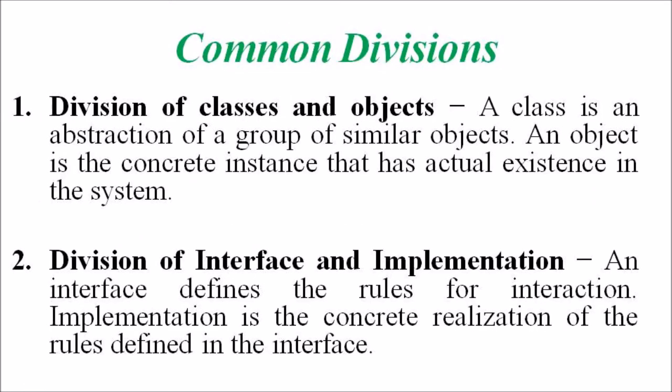The third common mechanism is common divisions. Object-oriented systems can be divided in many ways. The two common ways are: the division of class and object, and the division of interface and implementation. A class is an abstraction of a group of similar objects, while an object is a concrete instance with actual existence in the system. An interface defines the rules for interaction, while implementation is the concrete realization of those rules.